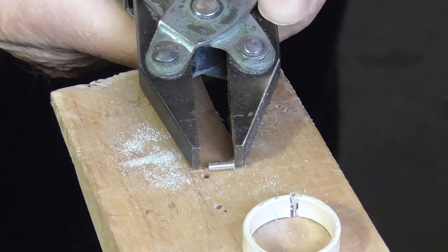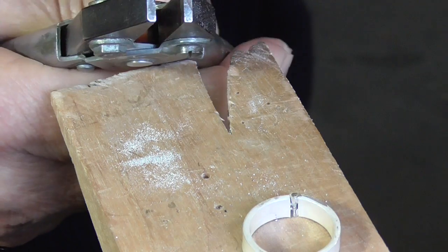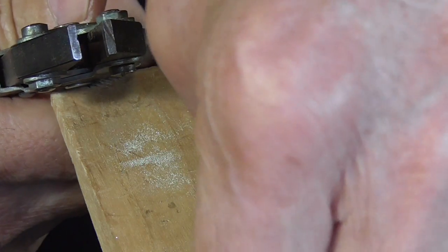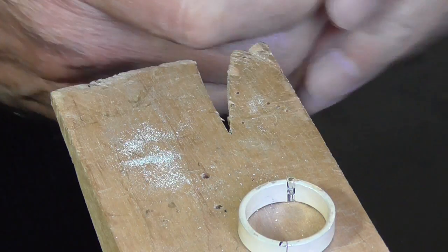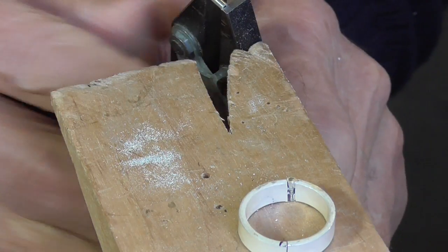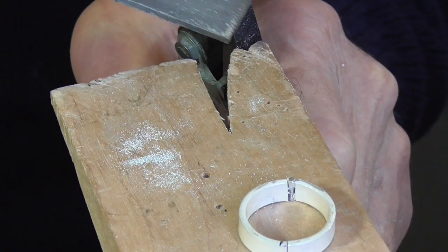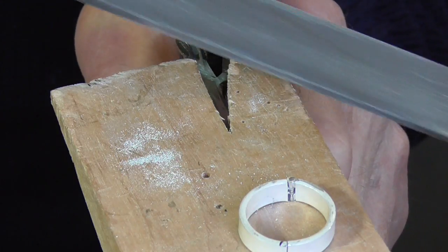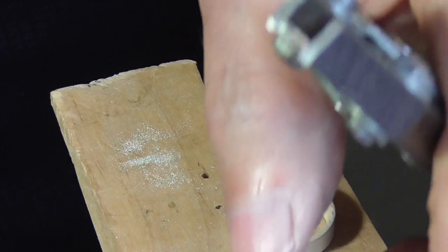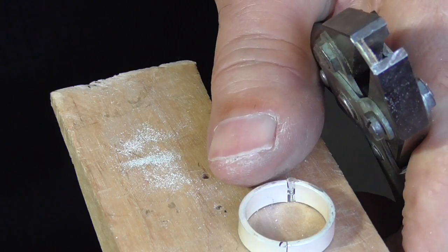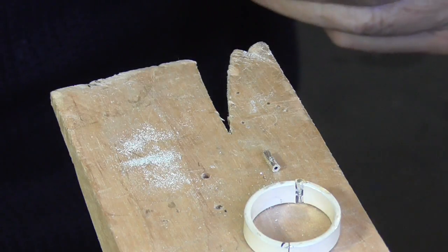Now I'm going to hold each of these pieces in my parallel jaw pliers so that they're slightly proud, so that I can file a small flat. I'm just going to brace it against my peg. It doesn't need to be big. Be sure you keep your file flat. And that's basically what I want. So that it's nice and flat, so that it'll sit against the ring and we get a good solder join.